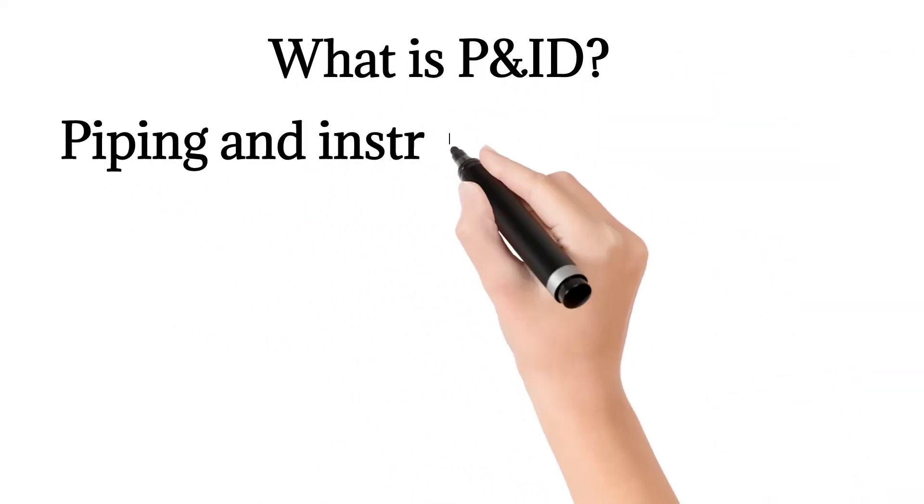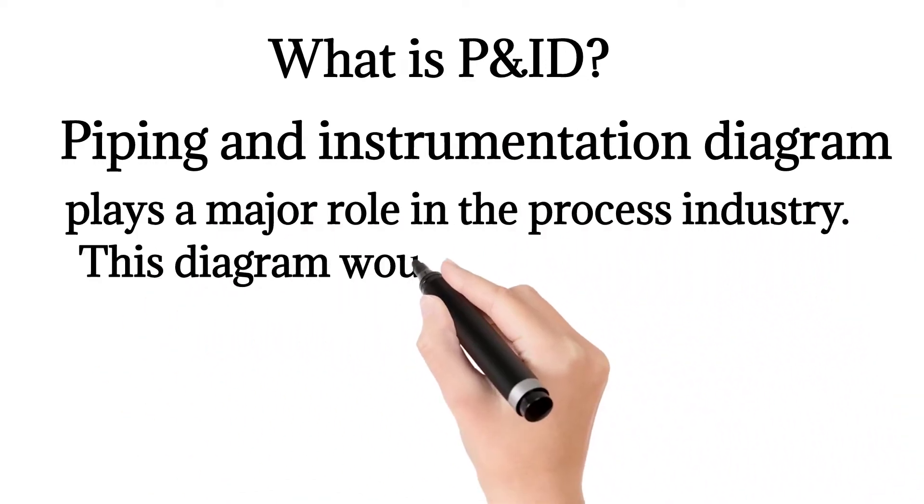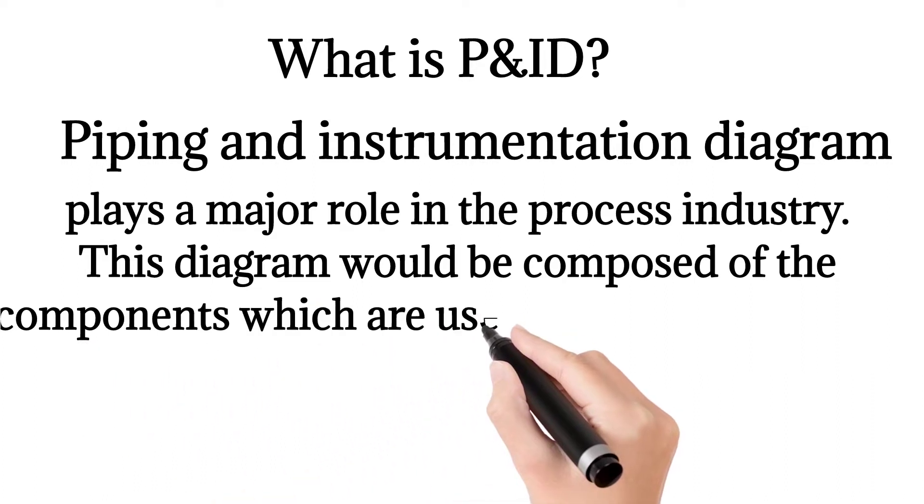Piping and instrumentation diagram plays a major role in the process industry. This diagram would be composed of the components which are used to check and control a specified process.